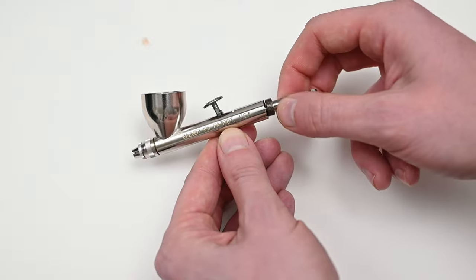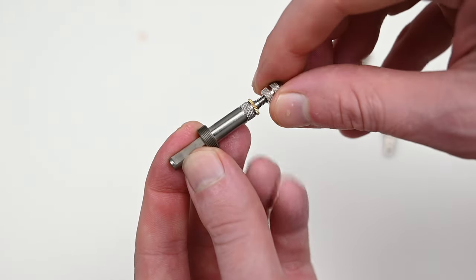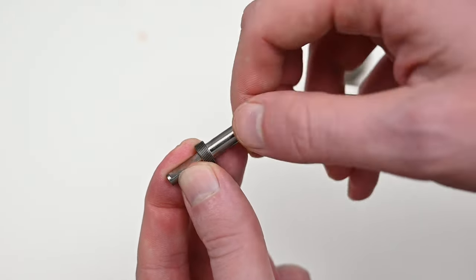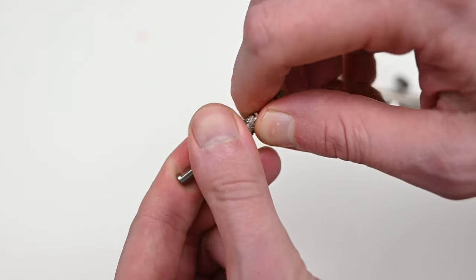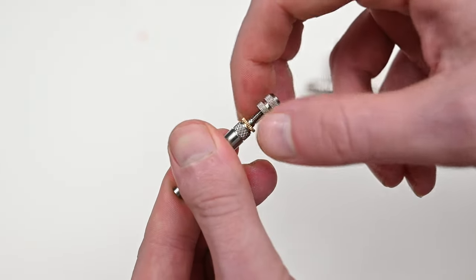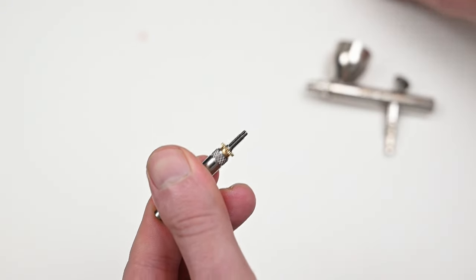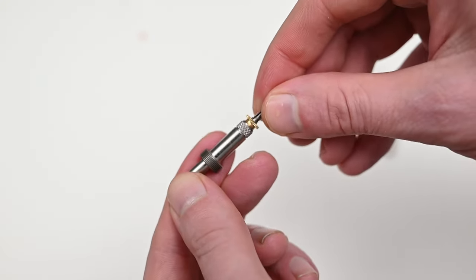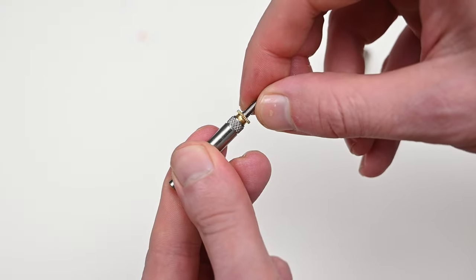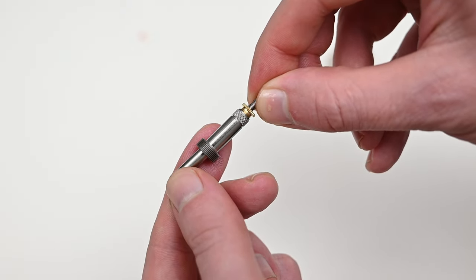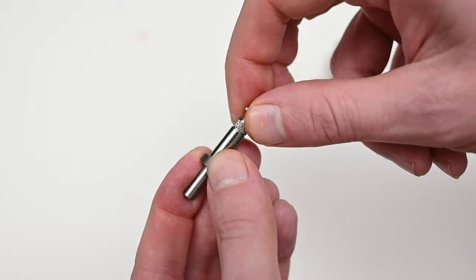So after unscrewing this part which Badger calls the tube shank, we have access to the needle spring assembly. You could use a small brass screw on the top here to adjust the spring tension. If you ever notice your airbrush spraying a small amount of paint without pulling back on the trigger, try tightening the spring screw so that the needle forms a better seal with that nozzle. On every one of my airbrushes I keep these screws tightened all the way down to give me better control.